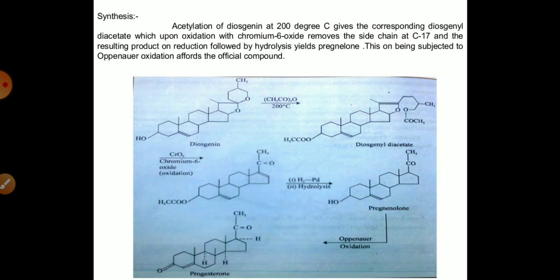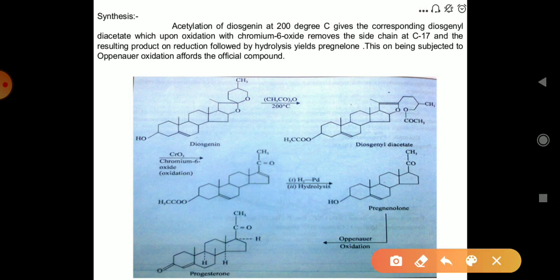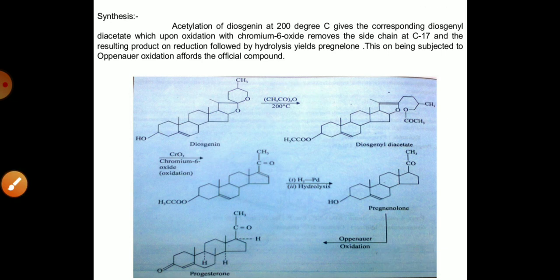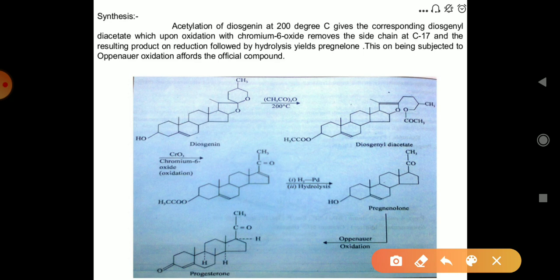Now the synthesis of progesterone. The acylation process takes place for the synthesis of progesterone. For this purpose, diazine in the presence of this reagent at 20 degrees centigrade is converted into diazine diacetate, which is then converted by the oxidation process into progesterone.